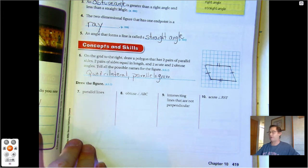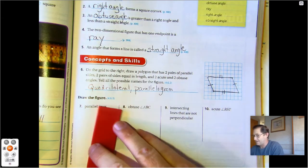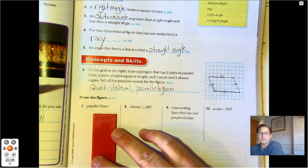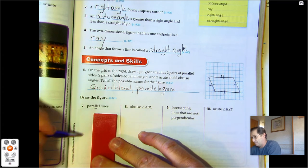Number seven, parallel lines. We said that parallel lines—the word itself has the parallel lines in it—we need two lines that look like the L's.